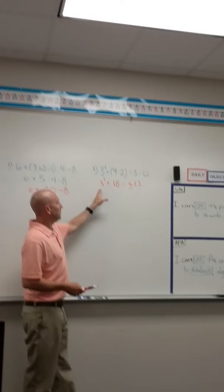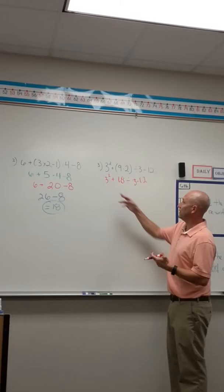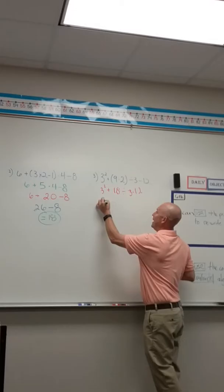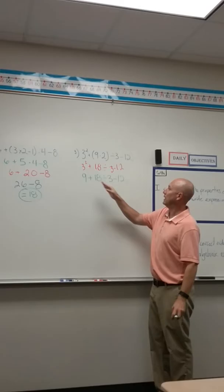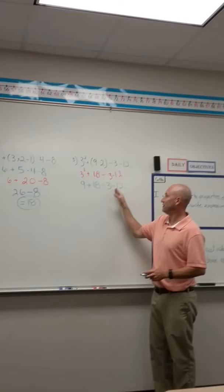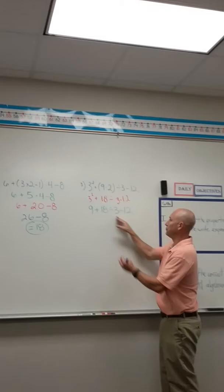I've got an exponent. I've got addition. I've got division and subtraction. So what I would do in the next step here, I would do exponents. 3 squared means 3 times 3. So I'm going to write that down and that's going to be 9. Bring down everything else. Now I've got addition, division, subtraction.